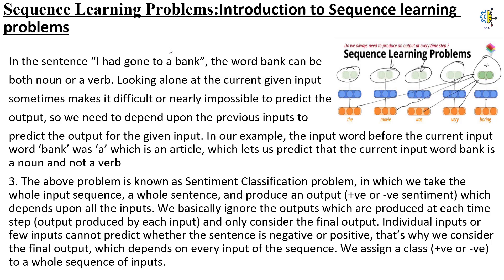In the sentence 'I had gone to a bank', the word 'bank' can be both a noun or a verb. Looking alone at the current given input sometimes makes it difficult or nearly impossible to predict the output. So we need to depend upon the various inputs to predict the output for the given input. In our example, the input word before the current input word 'bank' was 'a', which is an article, which lets us predict that the current input word 'bank' is a noun and not a verb.